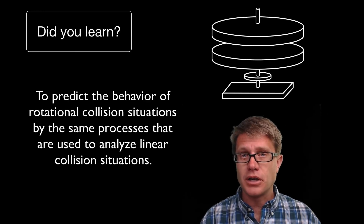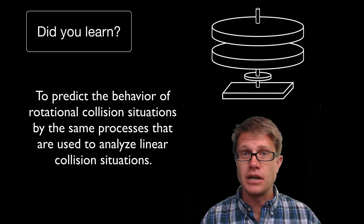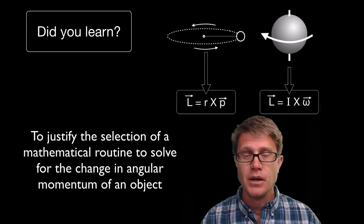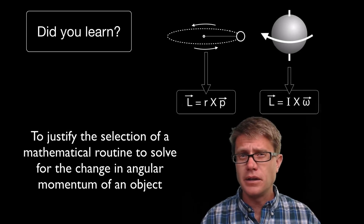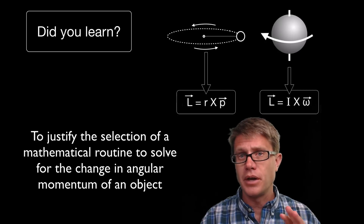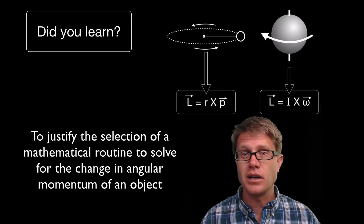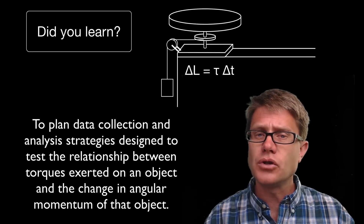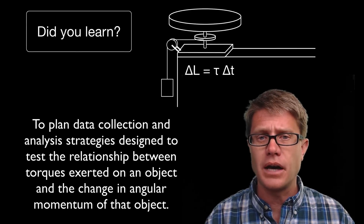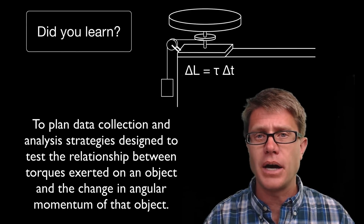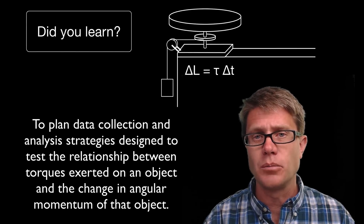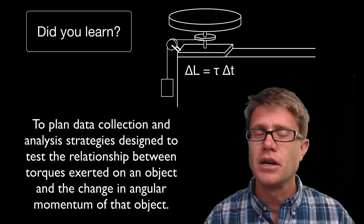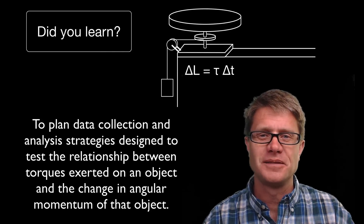Did you learn to predict the behavior of objects in a collision as they conserve angular momentum? Could you calculate the angular momentum of both a point object and an extended object? And could you use torques and changing torques to see how that impacts the angular momentum of the object? I hope so, and I hope that was helpful.